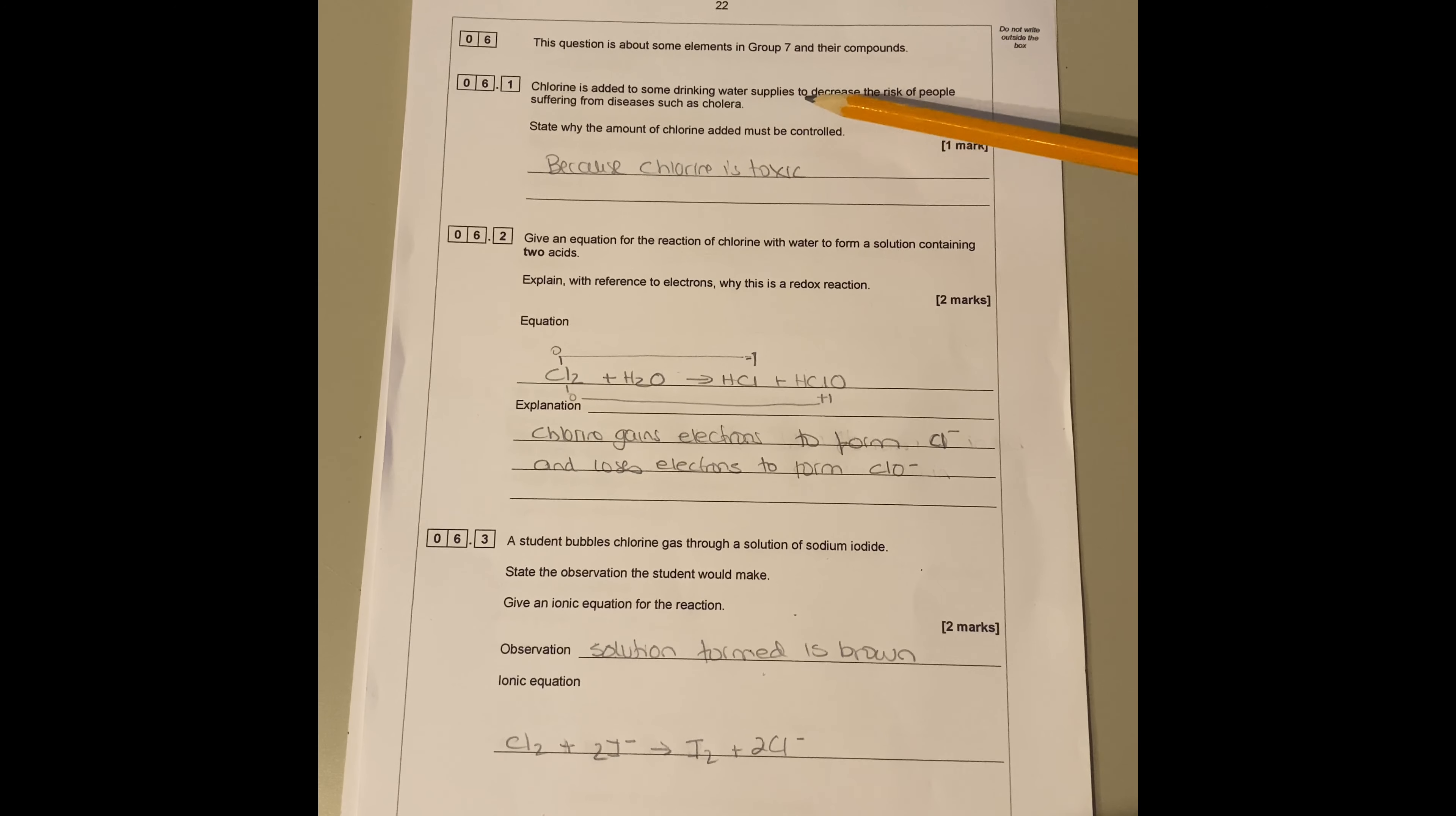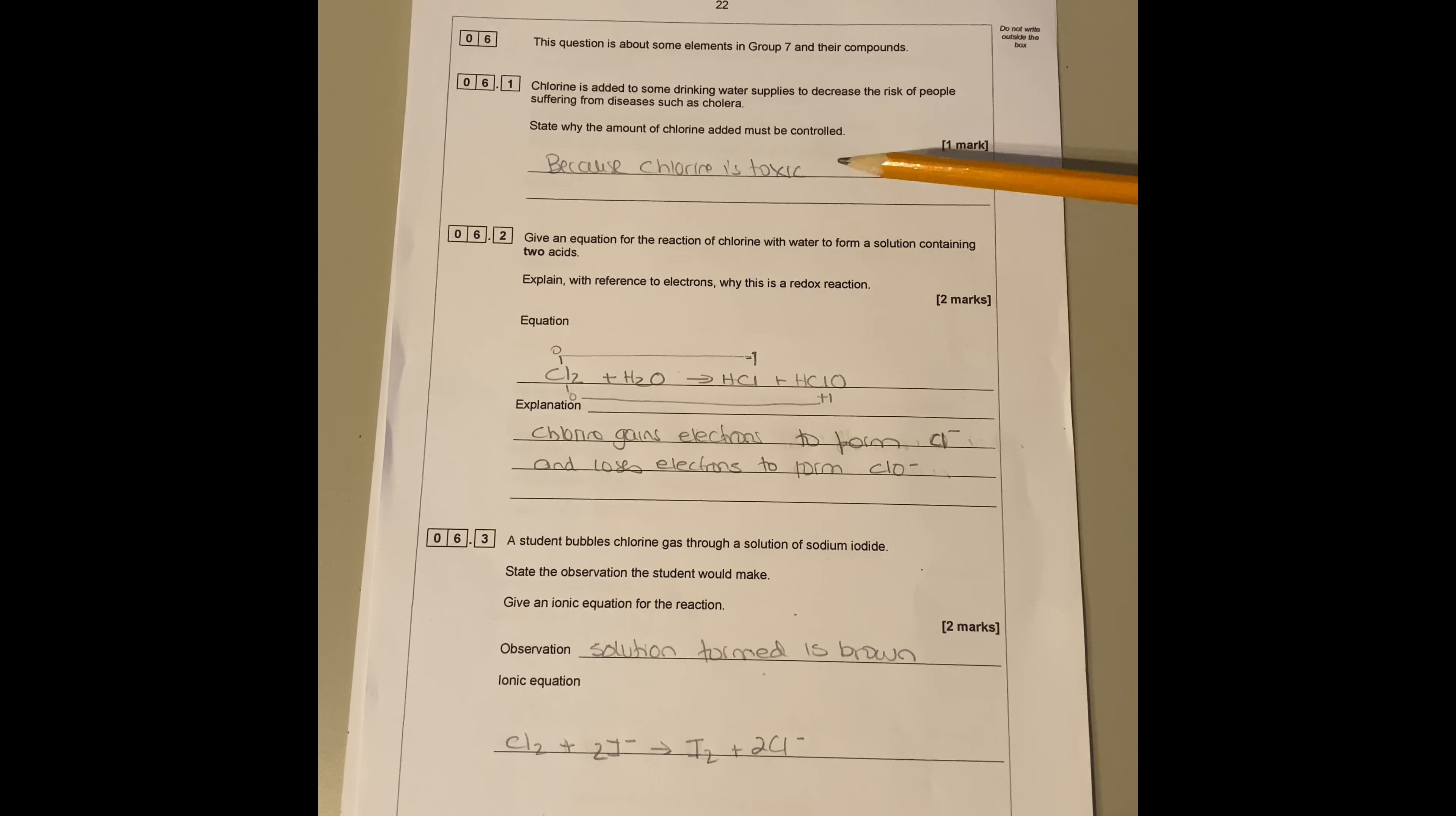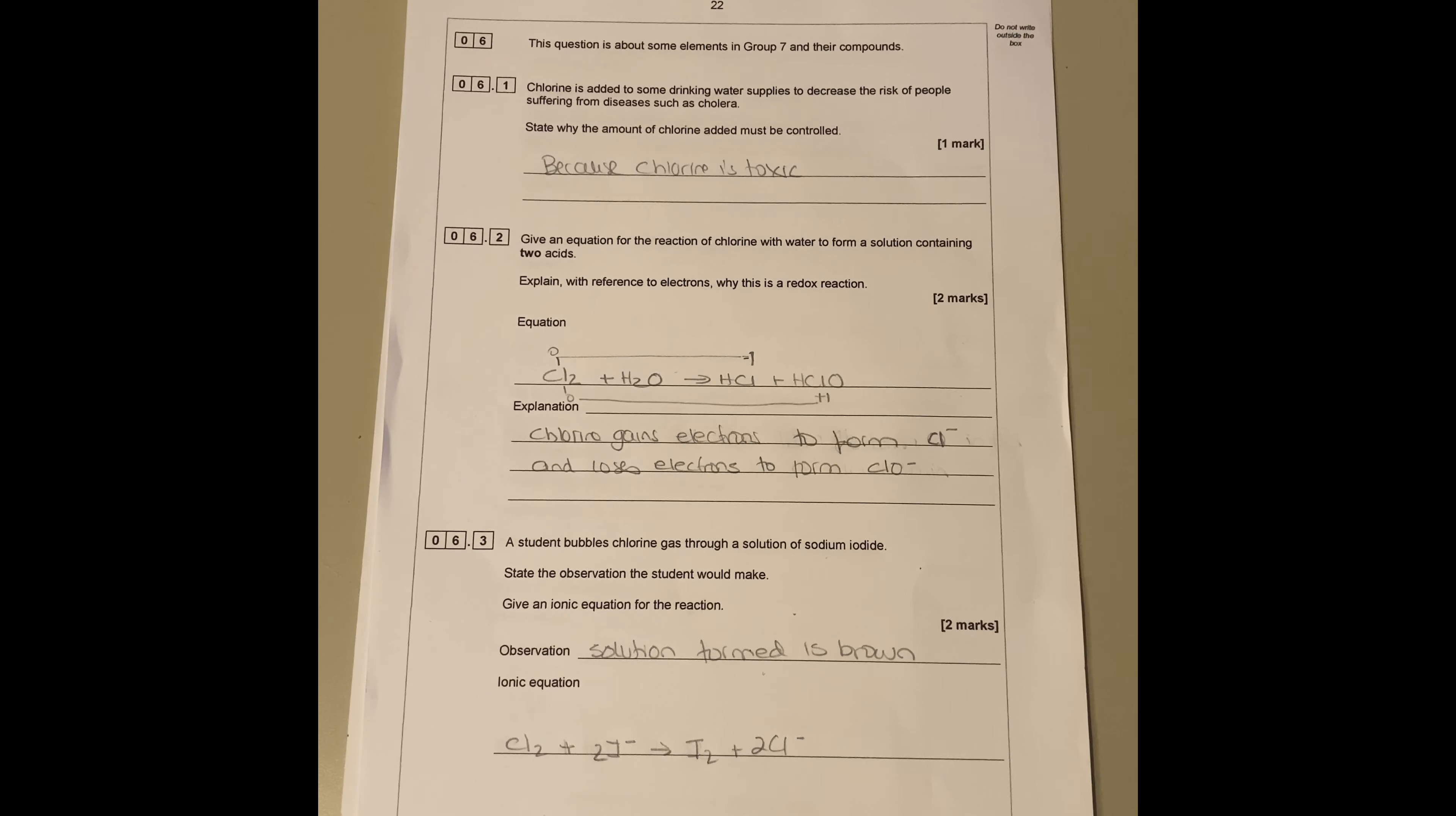State why the amount of chlorine added must be controlled because chlorine is toxic. We only add a very small amount so it's not going to hurt us, otherwise it would affect our health. Small amount is fine, bigger than small amount then it's just going to be dangerous.